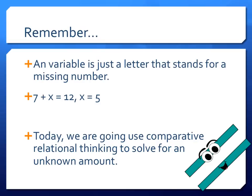To do this you need to remember that a variable is a missing number and that the variable can stand for any missing number. So in the equation 7 plus x equals 12, x would equal 5 because 7 plus 5 equals 12.